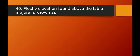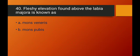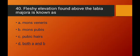Question number forty: the fleshy elevation found above the labia majora is known as what? It is called mons pubis, which is also known as mons veneris. Mons pubis is covered by skin and pubic hair. Since it has two correct names (A and B), option D — both A and B — is the correct answer.